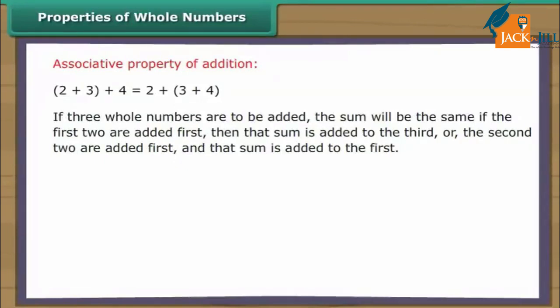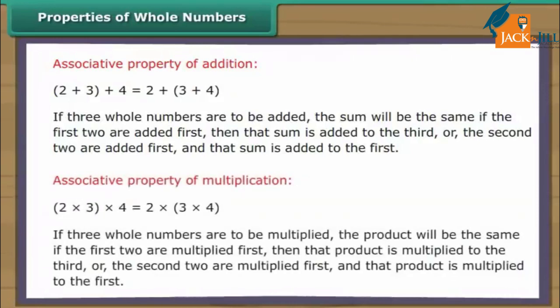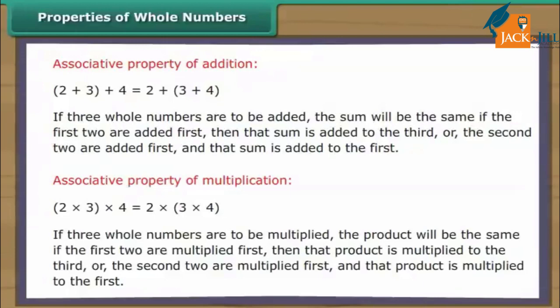If three whole numbers are to be multiplied, the product will be the same if the first two are multiplied first then the product is multiplied to the third, or the second two are multiplied first and that product is multiplied to the first.